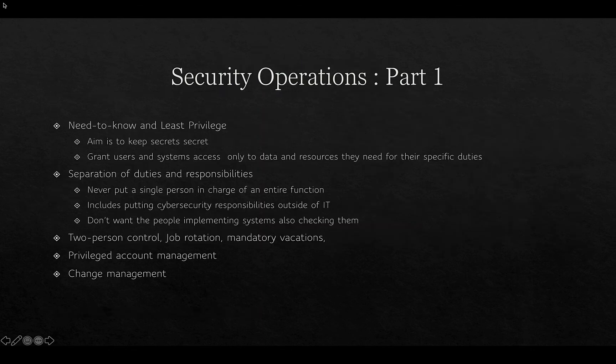In implementing security operations, one principle is need-to-know and least privilege — the aim is to keep secrets secret. We only grant users and systems access to the data and resources they need for their specific duties. Even if somebody is cleared at a top-secret level, if they're not involved in a particular operation, they don't need to know about it. By limiting the spread of information, it's easier to control and far harder for it to leak.